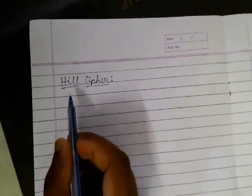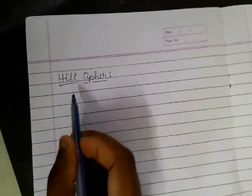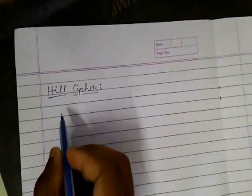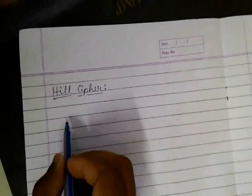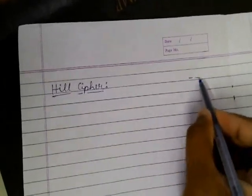Hi my viewers, in this video I'm going to talk about Hill cipher, the encryption technique of Hill cipher. Hill cipher is a polyalphabetic cipher in which we divide the text into two-by-two blocks.